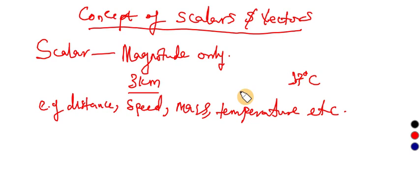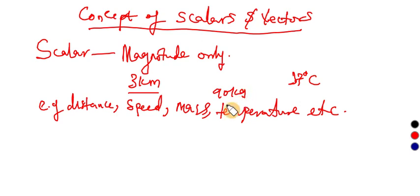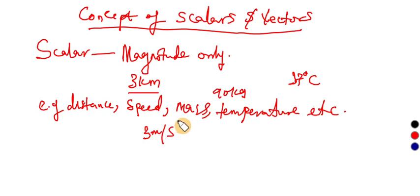Mass — let's say the mass of an object is 90 kg. Of course, no direction is involved. Speed: if an object's distance is increasing at 3 meters per second, I have not made any reference to direction. So speed is a scalar quantity, mass is a scalar quantity, temperature is a scalar quantity, and distance is a scalar quantity.